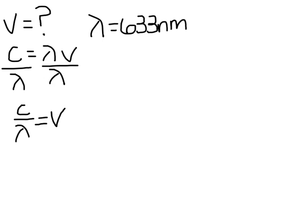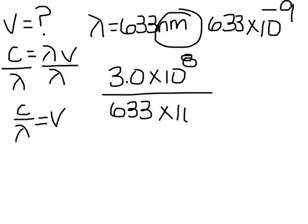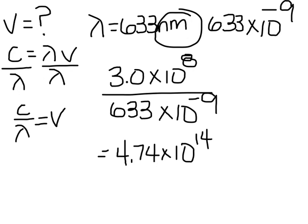When solving this problem, you've got to remember to change nanometers to meters by adding 10 to the negative 9th. So we have 3 times 10 to the 8th divided by 633 times 10 to the negative 9th. That gives us 4.74 times 10 to the 14th. Step four is to put in the right units, which is hertz.